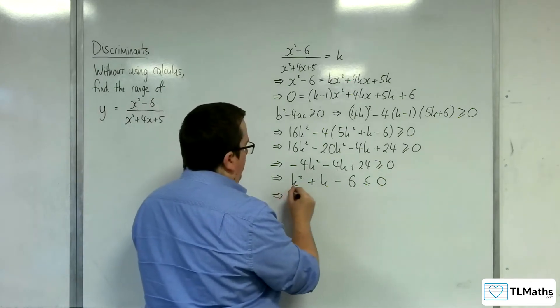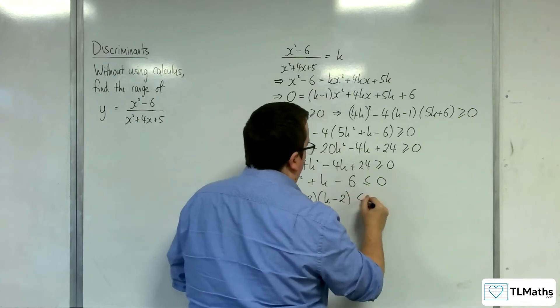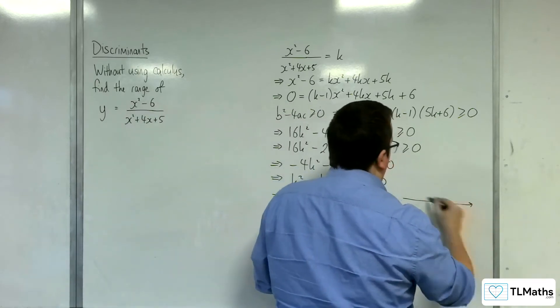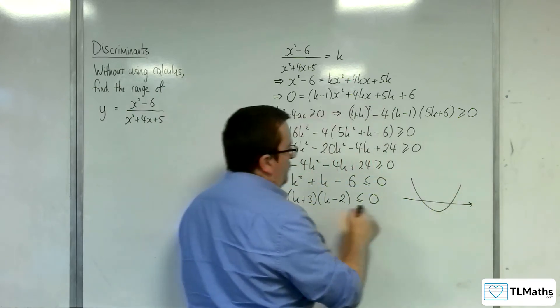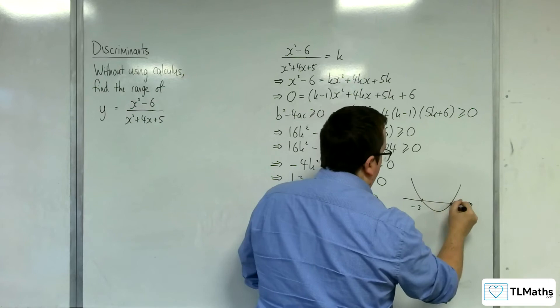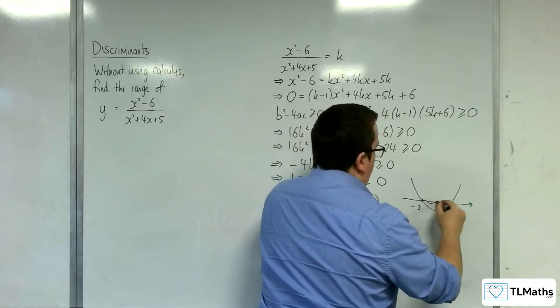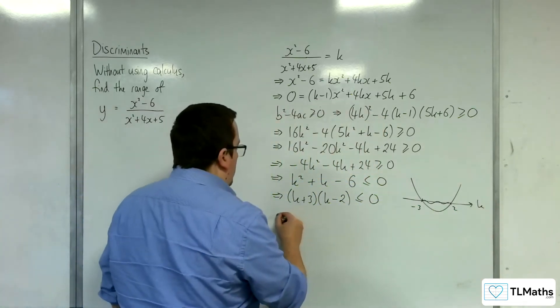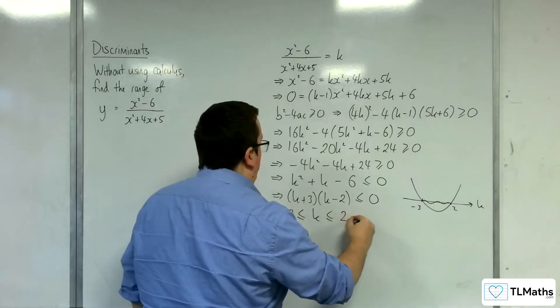So that factorizes to k plus 3 times k minus 2 is less than or equal to 0. So a quick little sketch of my parabola, it's going through minus 3 and 2. Where is the graph below the k-axis? It's below it there. So we're looking at minus 3 is less than or equal to k is less than or equal to 2.